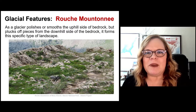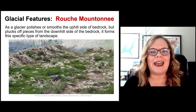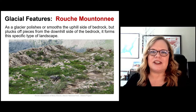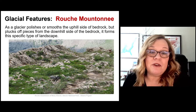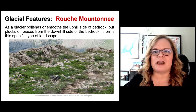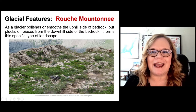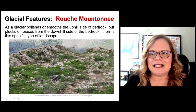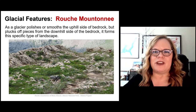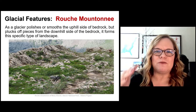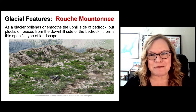Another feature is the roche moutonnée — a French term. What happens is the glacier polishes one side of a hill and plucks out the bottom. This occurs in both valley and continental glaciers. On the polished uphill side it looks like a nice smooth rounded hill; on the downhill side it's rough and jagged — that's where the glacier plucked out the bedrock. This example is from Glacier National Park.